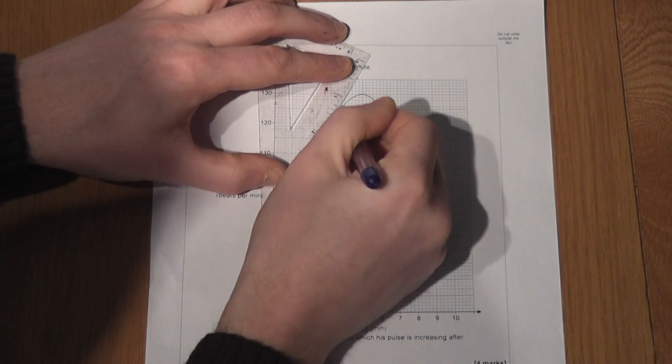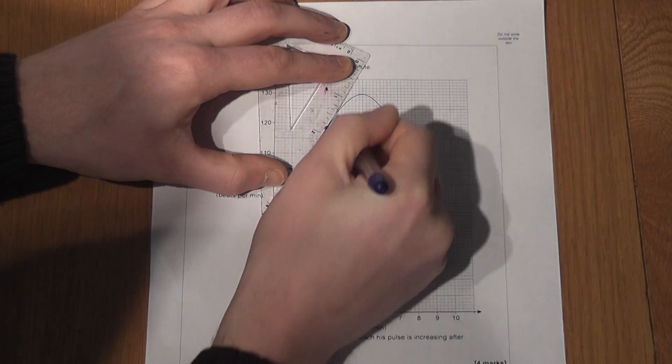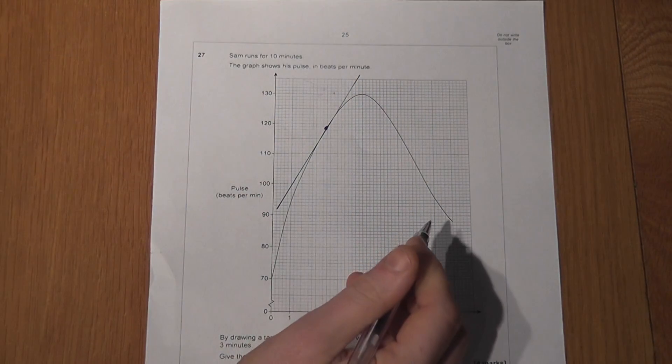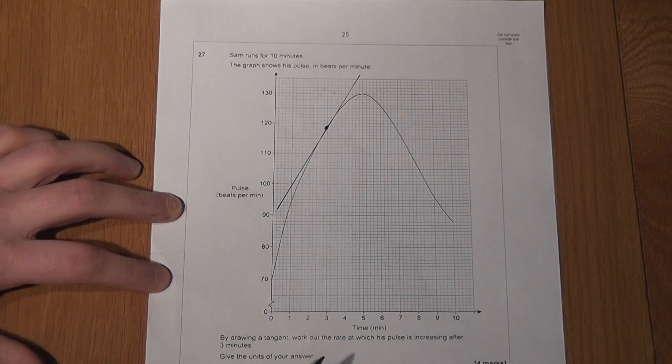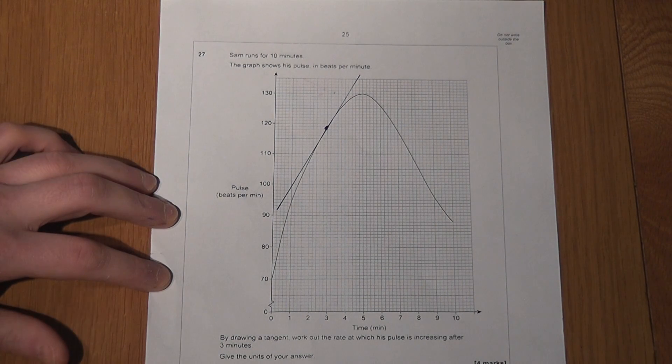And we then draw a line through, like so. So there's my first mark. I've drawn the tangent at the correct point.